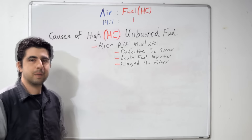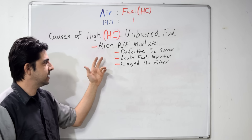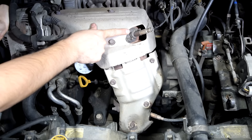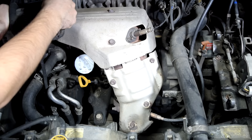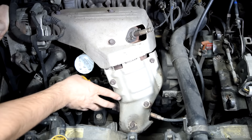Now let's go over some causes of high HC in your exhaust gases. The first cause is a rich air-fuel mixture. A defective O2 sensor could definitely cause that — specifically your pre-cat or upstream O2 sensor. Here's our catalytic converter, this is our pre-cat or upstream O2 sensor, which is responsible for adjusting the air-fuel mixture by sensing the amount of oxygen coming out of the engine. And that's our post-cat or downstream O2 sensor, which is responsible for monitoring the efficiency of your catalytic converter.